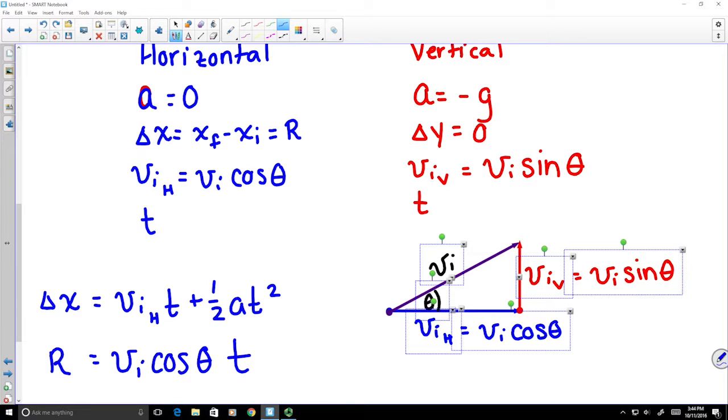The last term here does not have to be included because the acceleration is zero. So here we have range in terms of our Vi and our cosine theta, but we have time. We don't want our final expression for range to have time in it. We're actually going to use our vertical information to find an expression for the time that will allow us to eliminate the variable time from our expression.